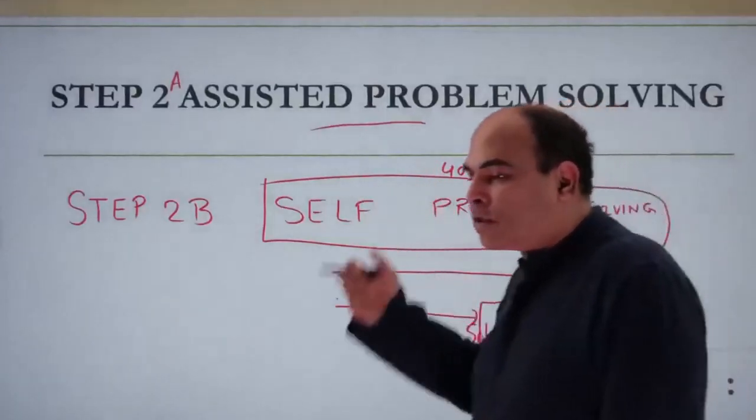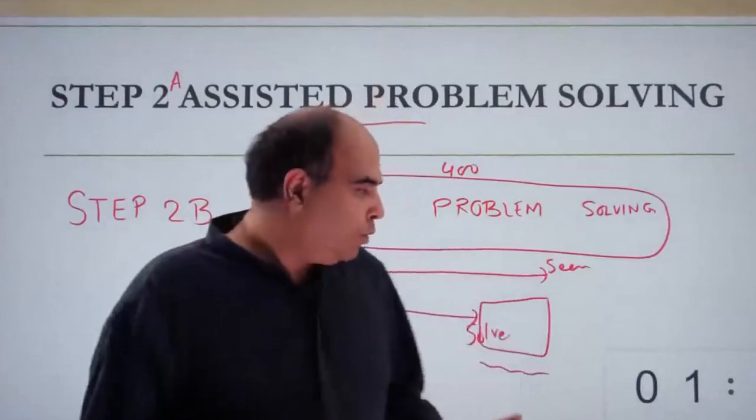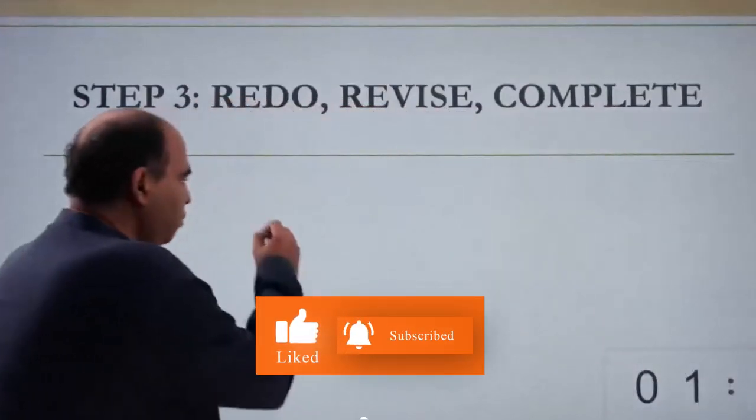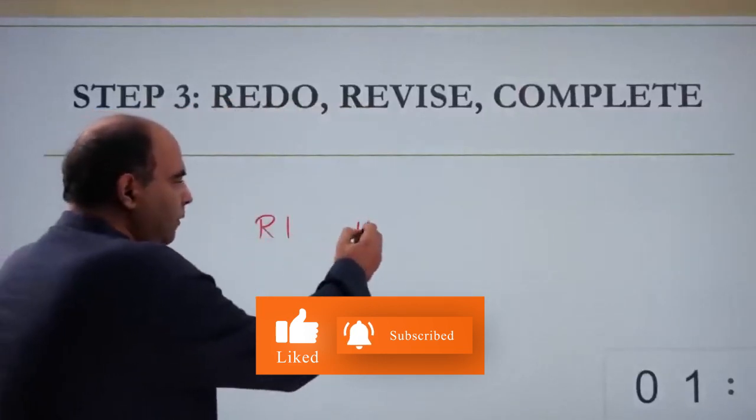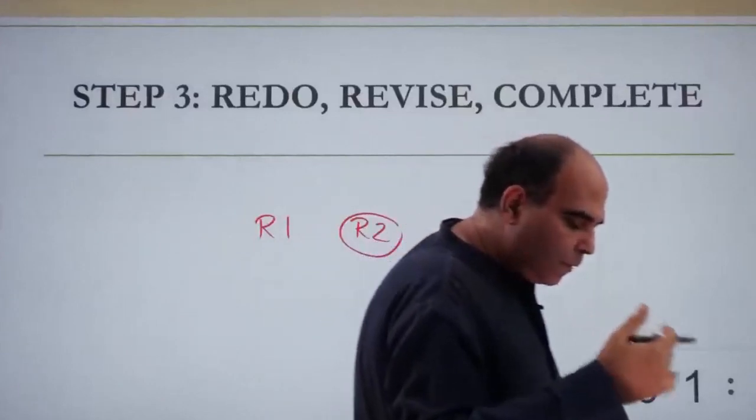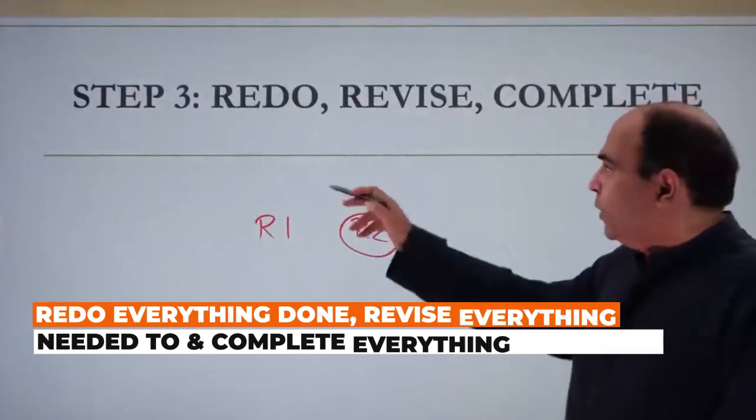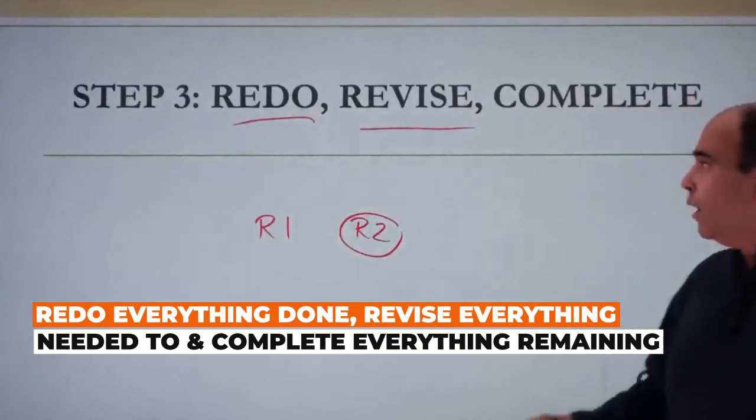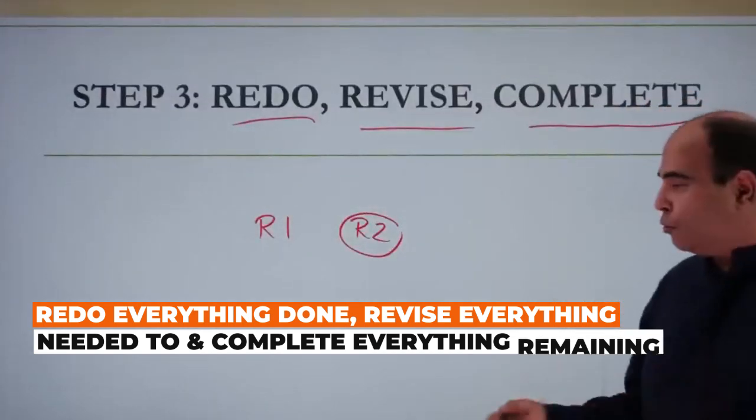So you don't push this into assisted problem solving. Instead, you keep coming back to the chapter for multiple rounds—that's very important. You do Round 1 on the chapter, then Round 2 maybe 15 days to a month later. You redo everything, revise what you need to, and complete whatever you haven't done.